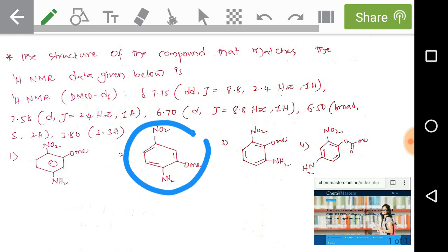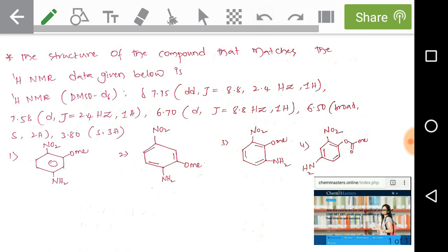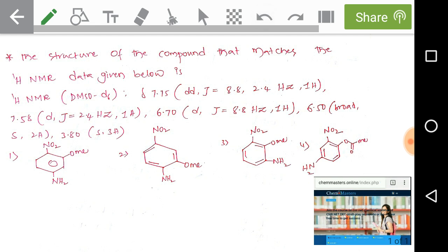From all this analysis, you can simply say option 2 is the correct answer. If you are interested, visit chemmasters.online or download the mobile app ChemMasters from Google Play Store and join the course on CSIR, GATE, and JAM to get the best concept lectures, previous year problems, and standard assignment questions. Thank you.